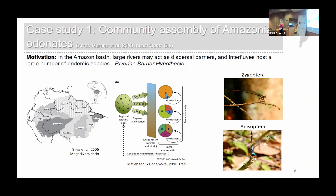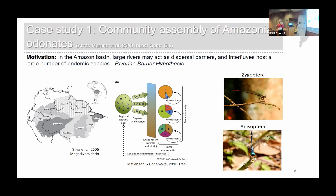The first person who observed that large interfluvial regions like Guiana, Inambari, and Rondonia create areas of endemism was Wallace — Alfred Russel Wallace. He observed that these rivers act as barriers for the movement of monkeys. After Wallace, many people working with Amazonian animals tested and corroborated this river barrier hypothesis. I was very interested in knowing if this hypothesis worked for dragonflies and damselflies.